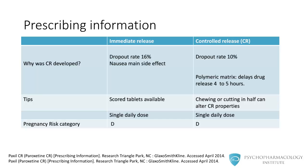Both formulations are dosed as a single daily dose. The manufacturer recommends that patients take the medication in the morning, but it can be given in the evening too. Lastly, paroxetine is labeled as pregnancy risk category D, meaning that there is positive evidence of risk to the human fetus.